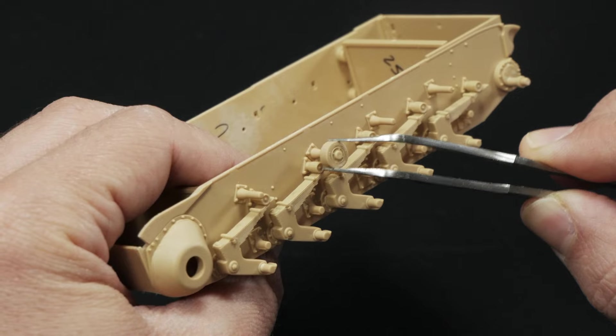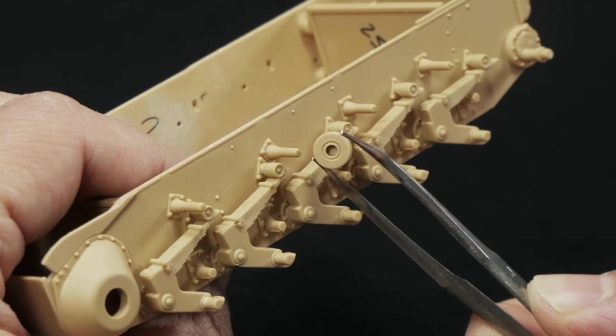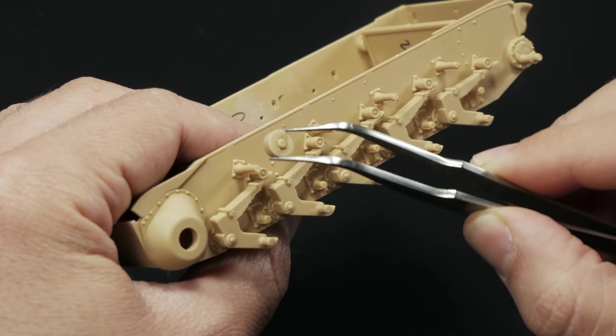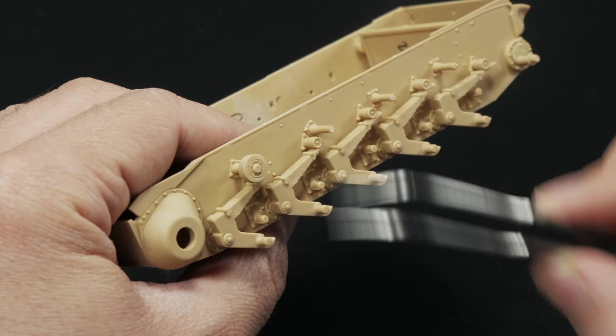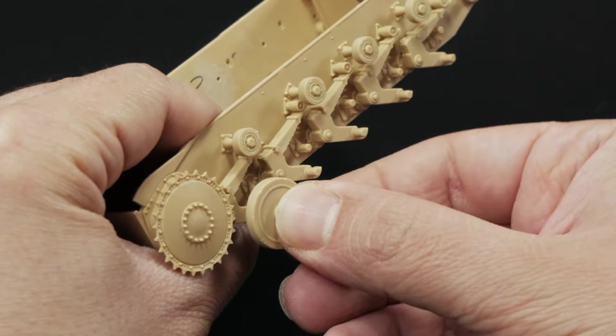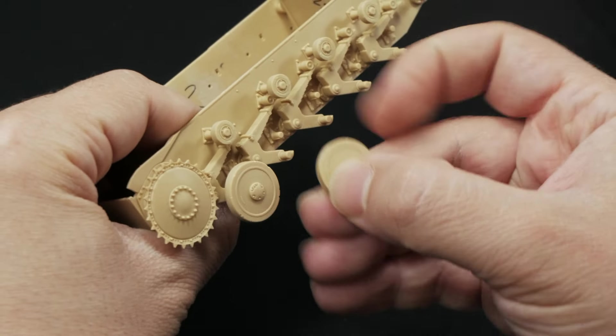I use Tamiya extra thin cement for all plastic parts. For example, in this case the return roller's hole was too wide and didn't fit properly. Using some small drops of CA glue really helped me fit these parts in place quickly.